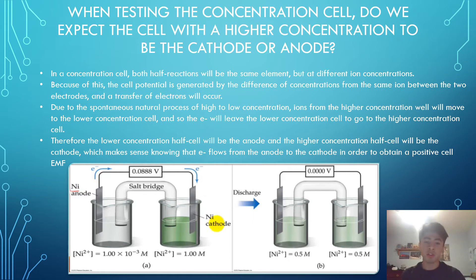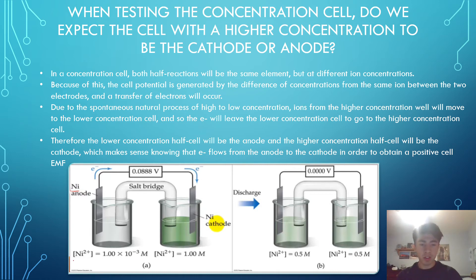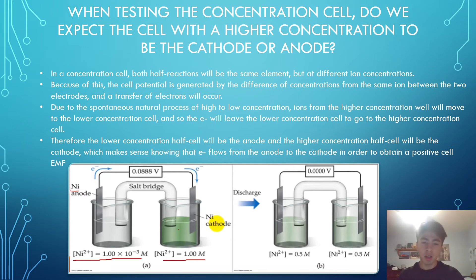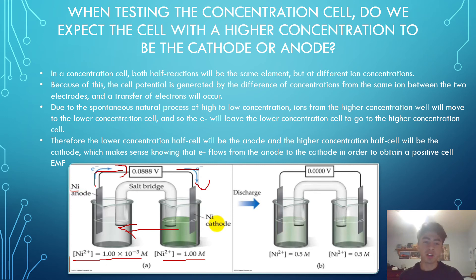In a little example found online, we have a concentration cell here. We start with two half reactions, both with the same ion. In the first one we have nickel 2+ at a very low concentration, and the next half reaction has a higher concentration of the same ion. This means that the higher concentration ions will move into the lower concentration half reaction, and therefore the electrons are able to flow in the opposite direction. Knowing that we want electrons to flow from the anode to the cathode, this means that the lower concentration cell will be the anode and the higher concentration cell will be the cathode.